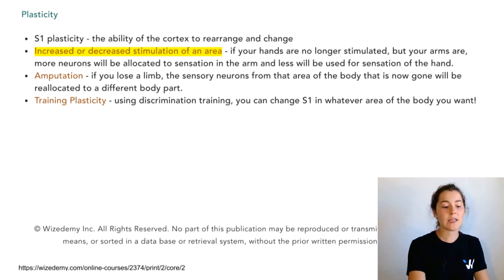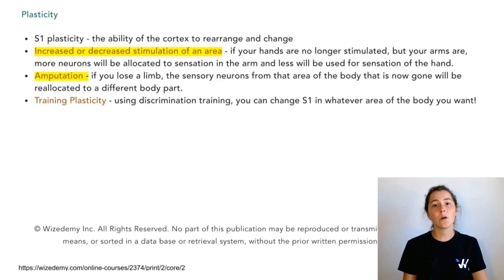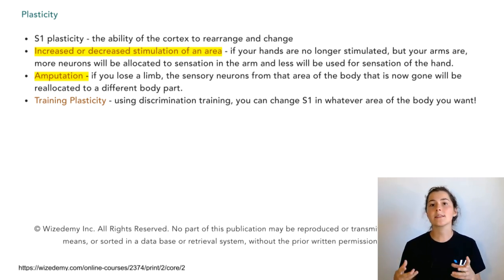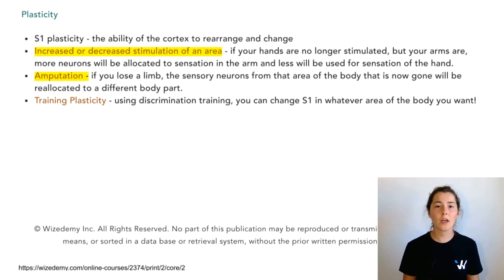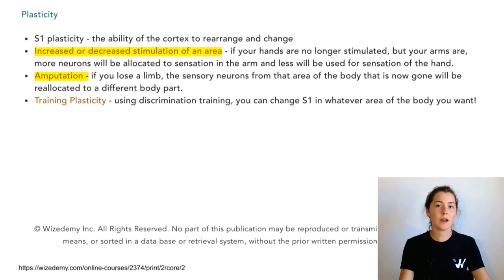The second possibility is because of amputation. If somebody loses a leg or a hand, the neurons that were designated to process information coming from that area will then change and will be used for a different area of the body instead.